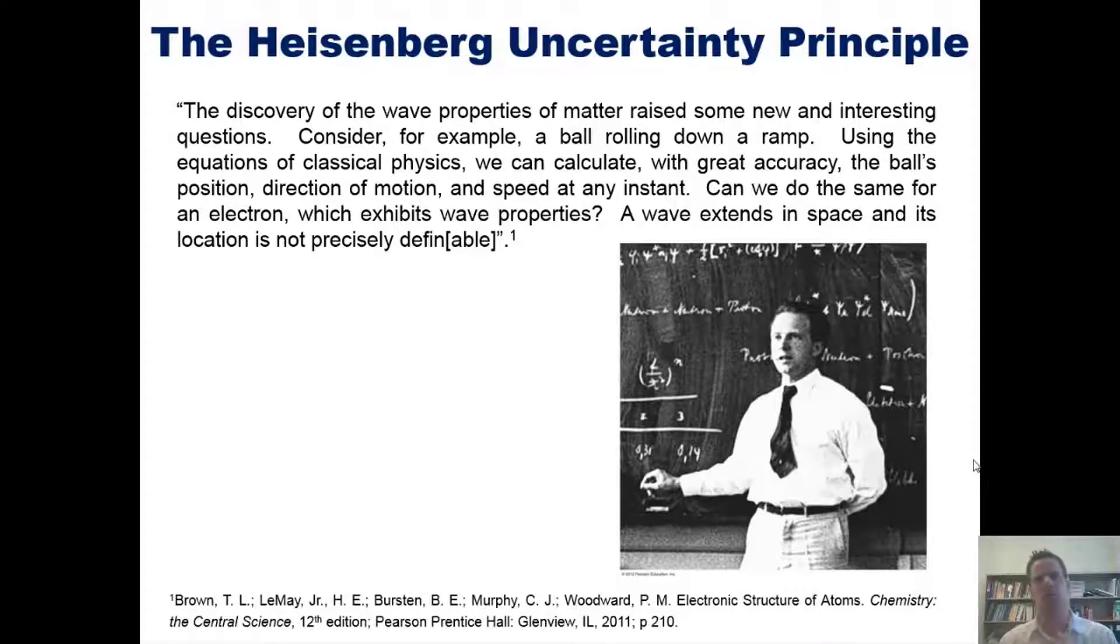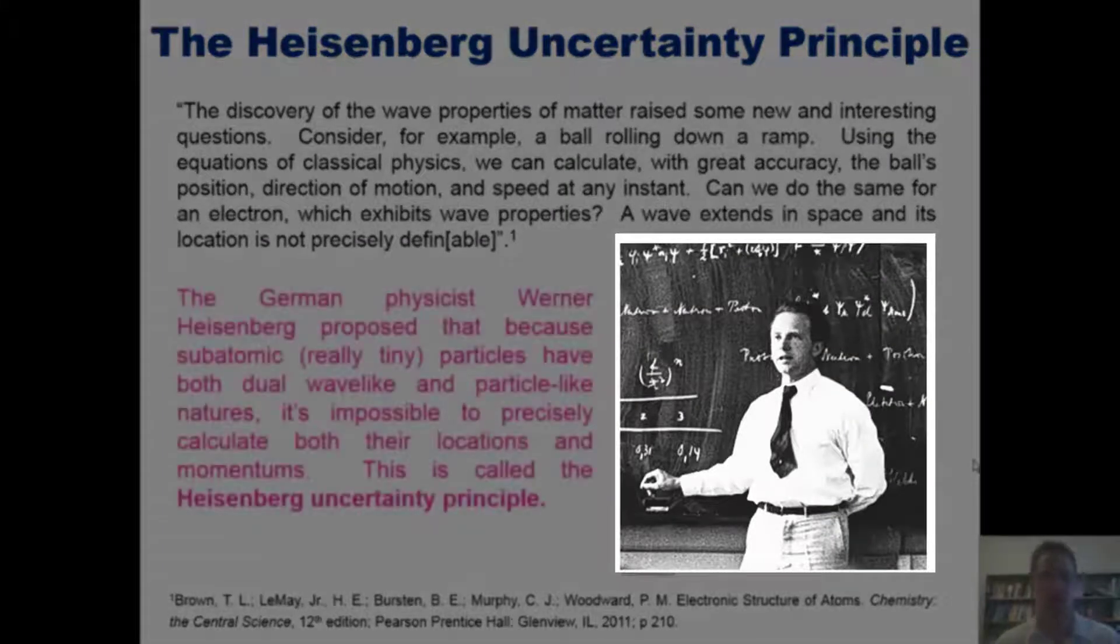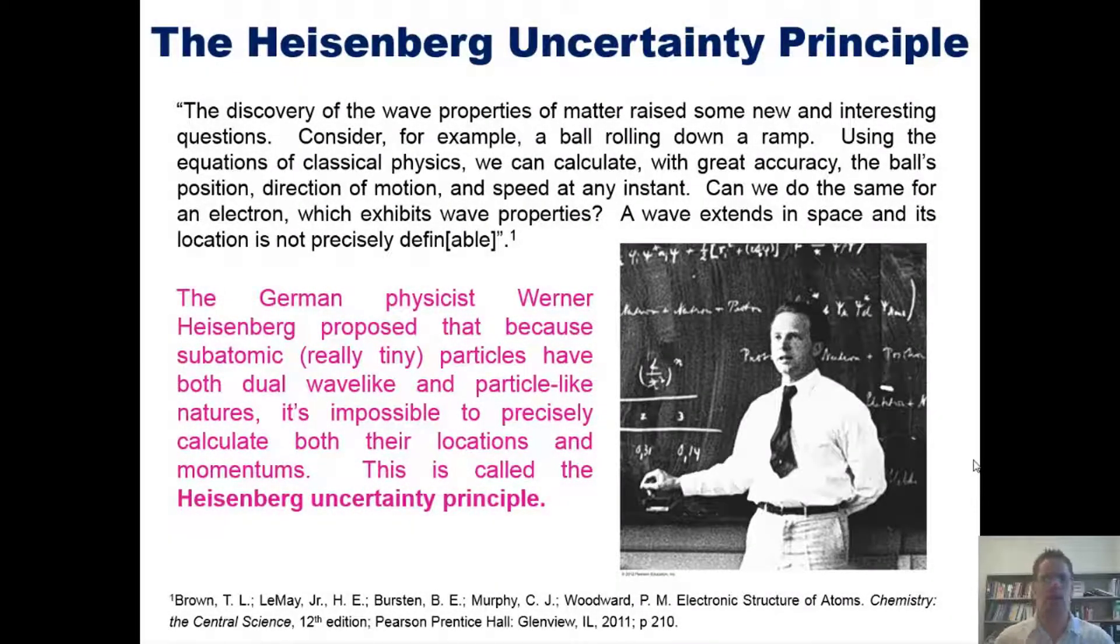A German physicist whose name was Werner Heisenberg. He proposed that because subatomic, or really really tiny particles, have both wave-like and particle-like natures, it's impossible to precisely calculate both their locations and their momentums or velocities.